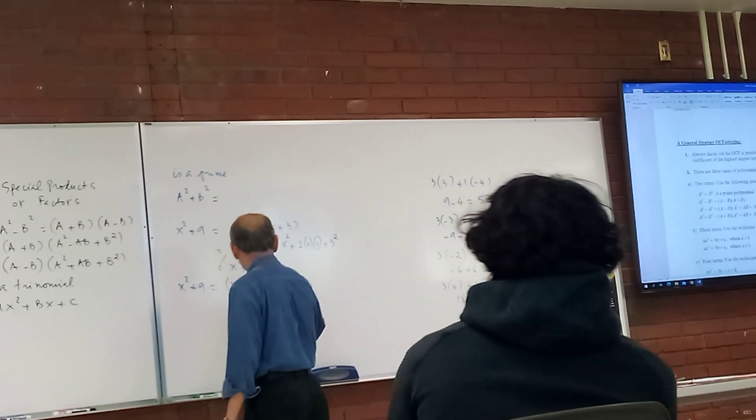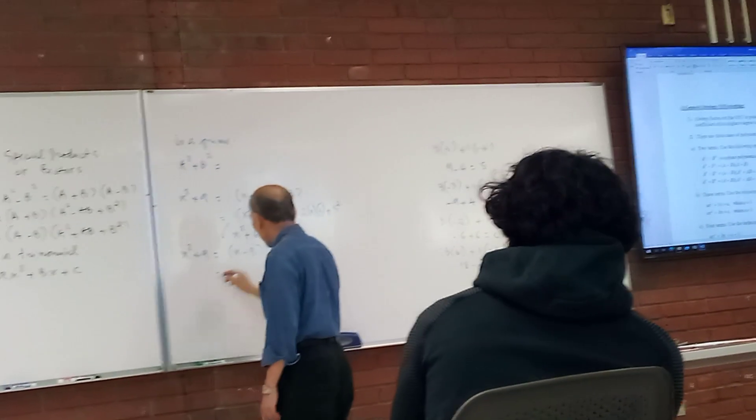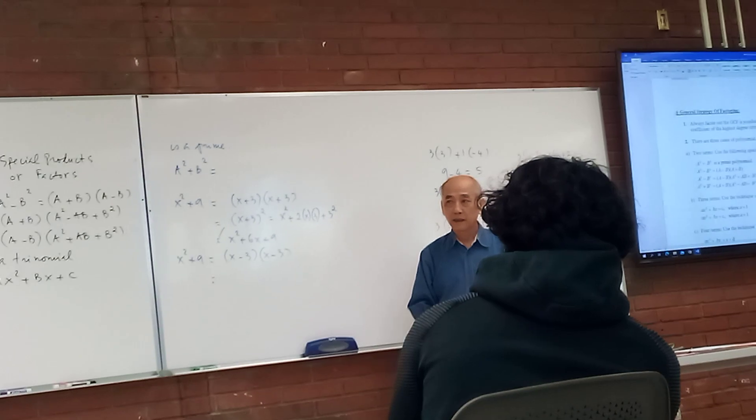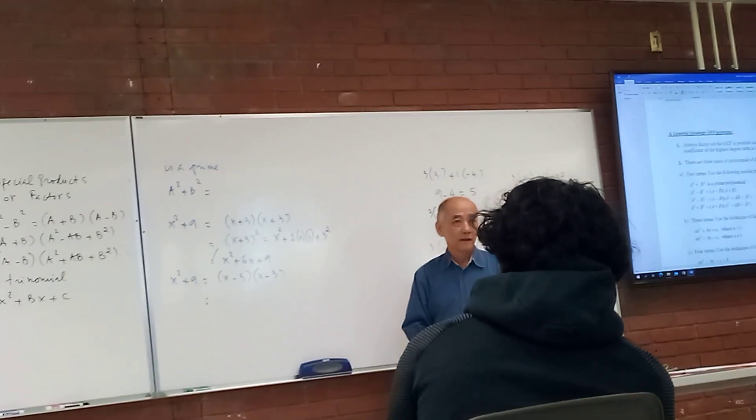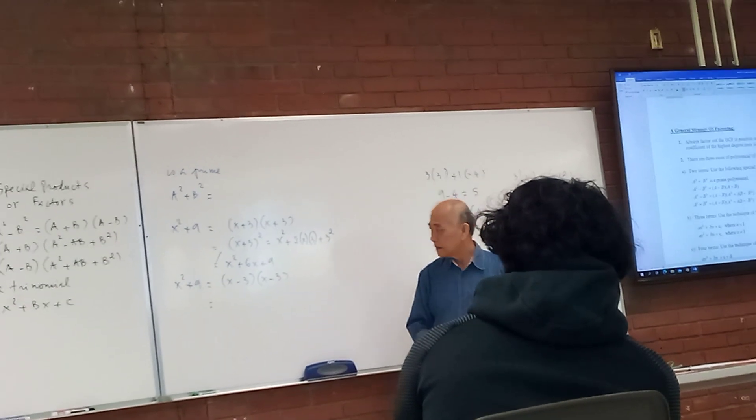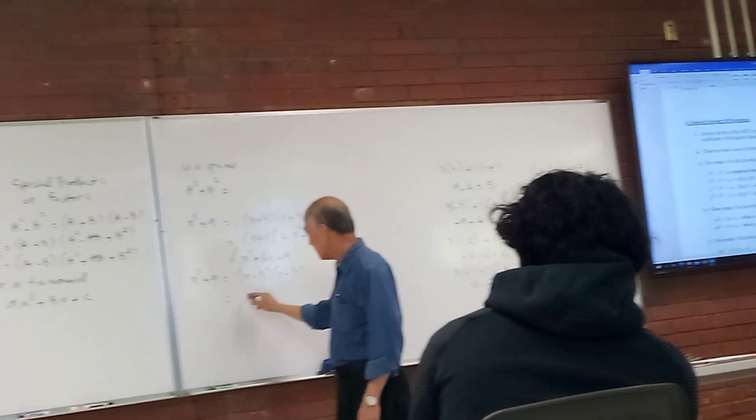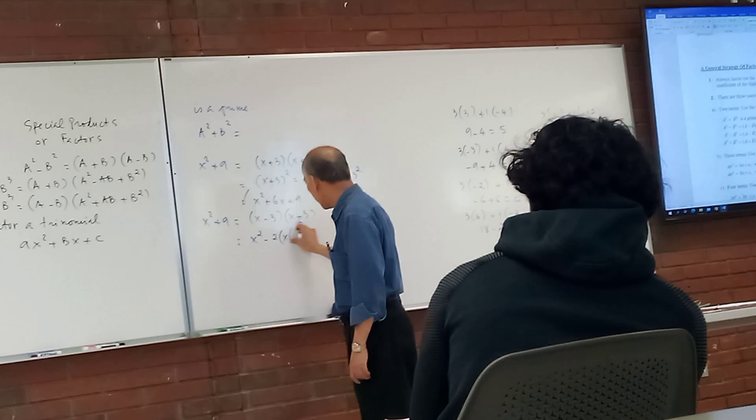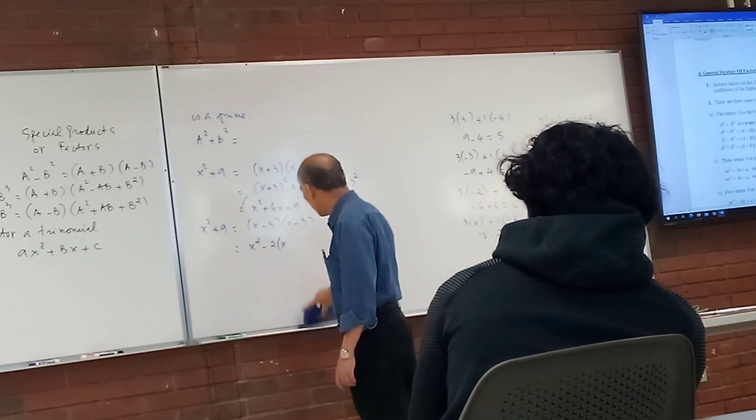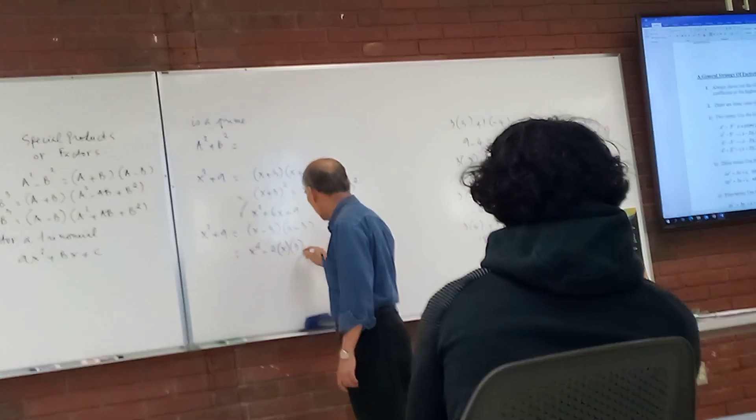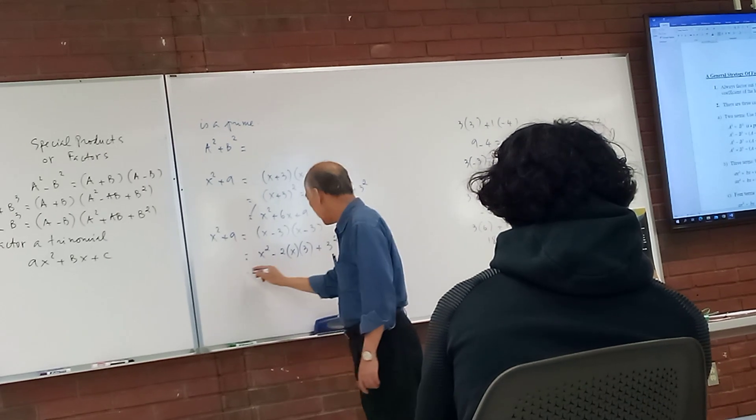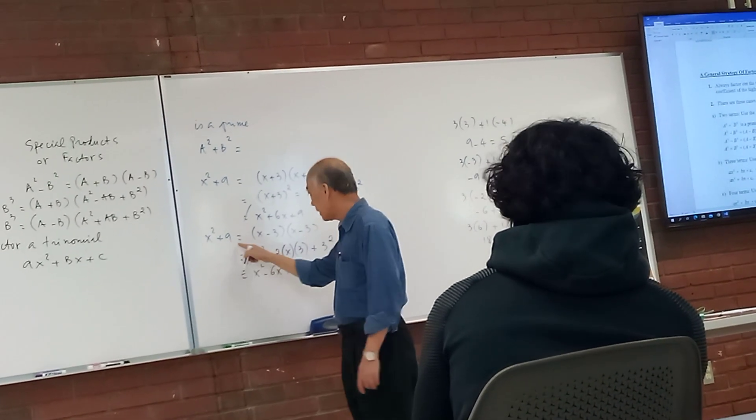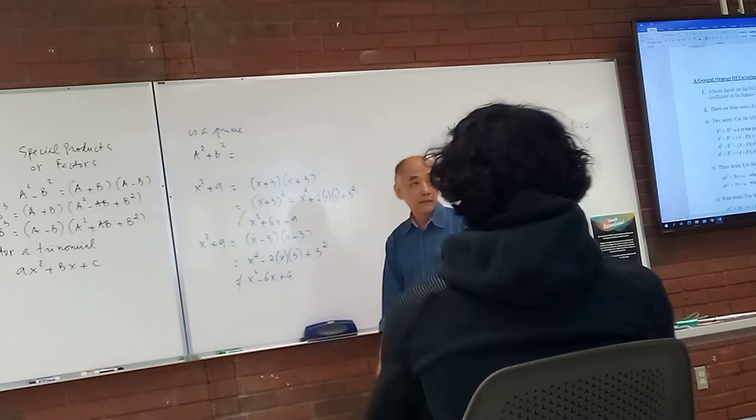x - 3 times x - 3. What if (x - 3)²? x² - 2 times x times 3. (x - 3)² equals x² - 6x + 9. They are not the same. Now I'll try...